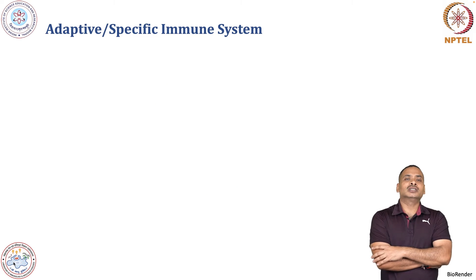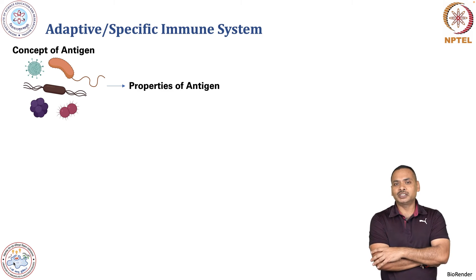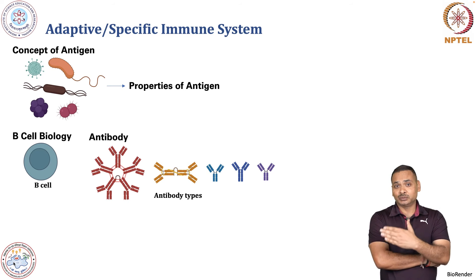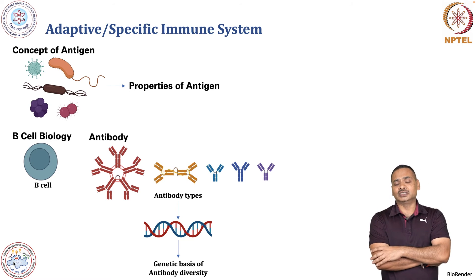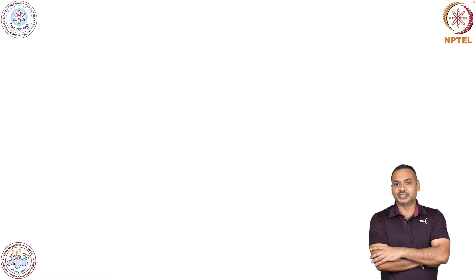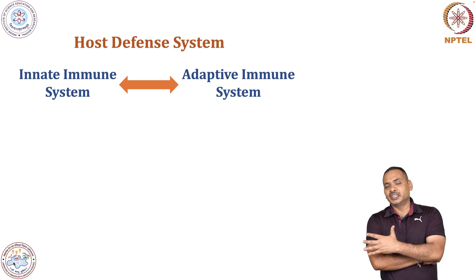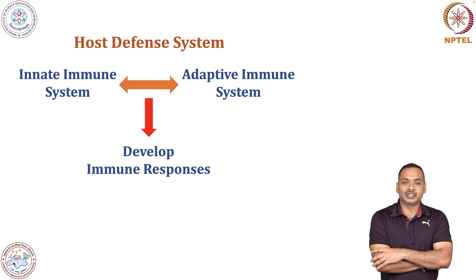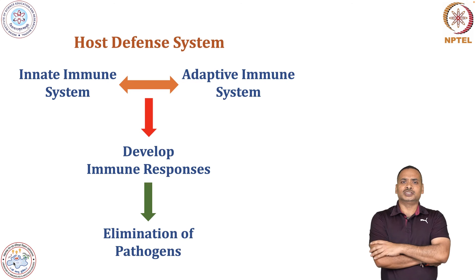Then we will move to the adaptive immune system, where we will discuss about the concept of antigen, the properties of antigen, and B cell biology. We will discuss about antibody types and the genetic basis of antibody diversity. We will also discuss about T cells, T cell biology, and their role in immunity. The innate immune system communicates with adaptive immunity and upon communication they develop an appropriate immune response in order to eliminate the pathogen.